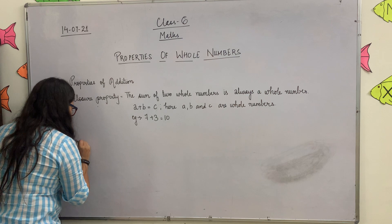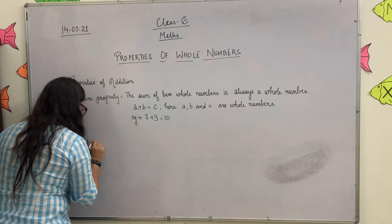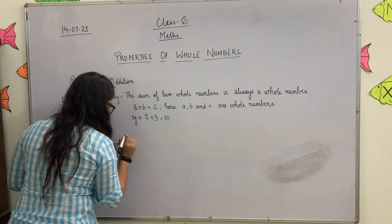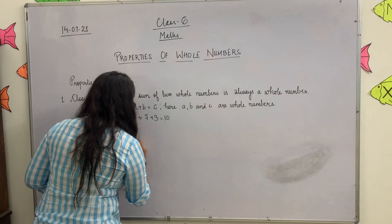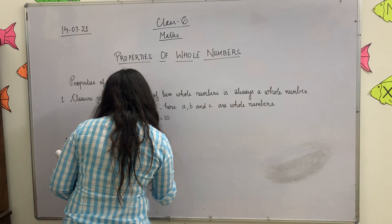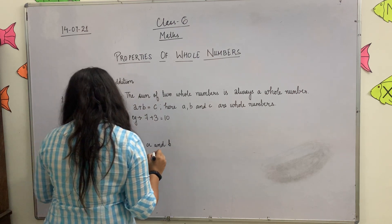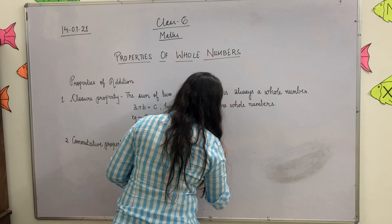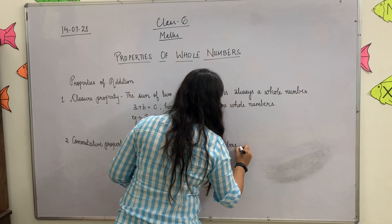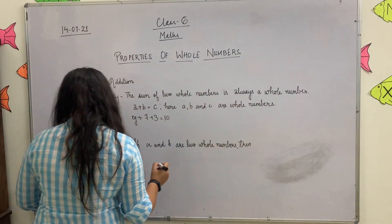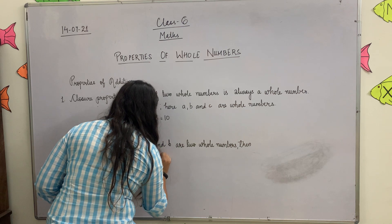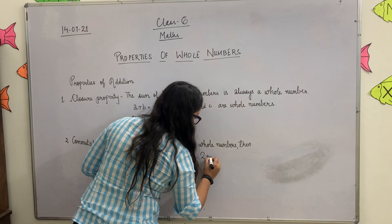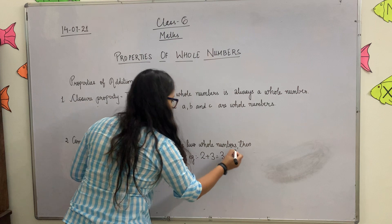Now write number two with your black gel pen: Commutative Property. Write with blue gel pen: If A and B are two whole numbers, then A plus B is equal to B plus A. For example, 2 plus 3 is equal to 3 plus 2. Write it down.